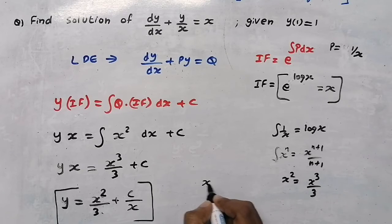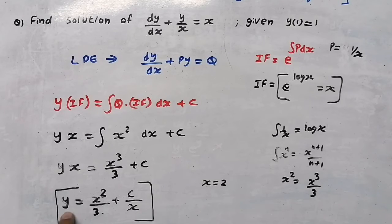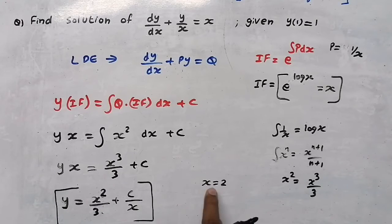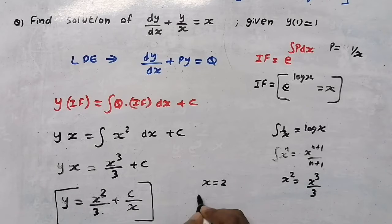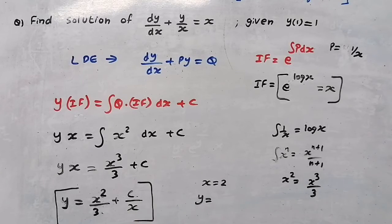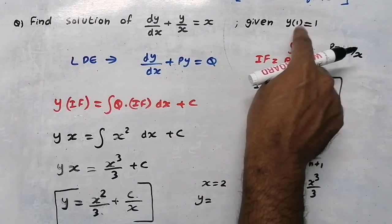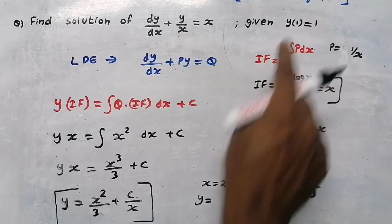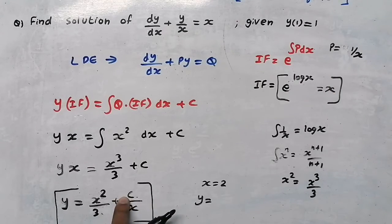The solution tells us: given any value of x, we can find the corresponding value of the dependent variable y. However, there is a constant C, so if an initial condition is given in the question, it is used to find the value of C.